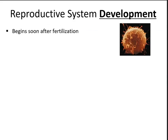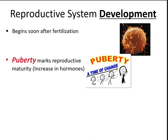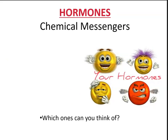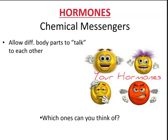Reproductive system development begins soon after fertilization. However, we have the period known as puberty, which marks reproductive maturity and is due to an increase in hormones. Puberty is a time of change for everyone. So what are hormones? Hormones are chemical messengers that allow different body parts to communicate with each other. We have many different types of hormones that control our body systems as well as have effects on our mood.